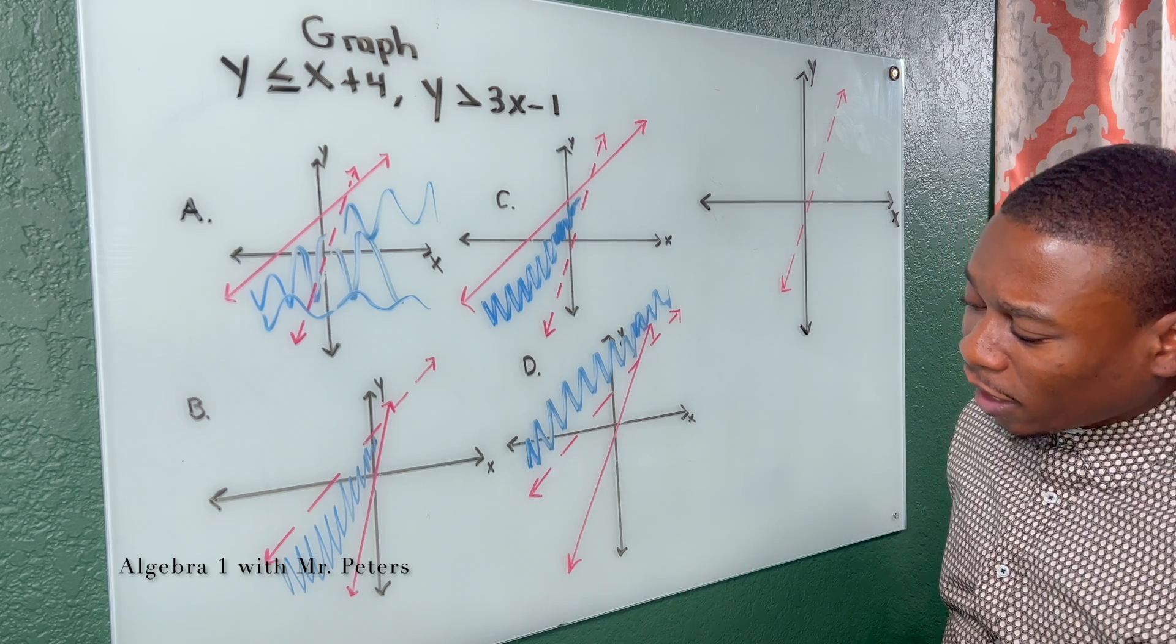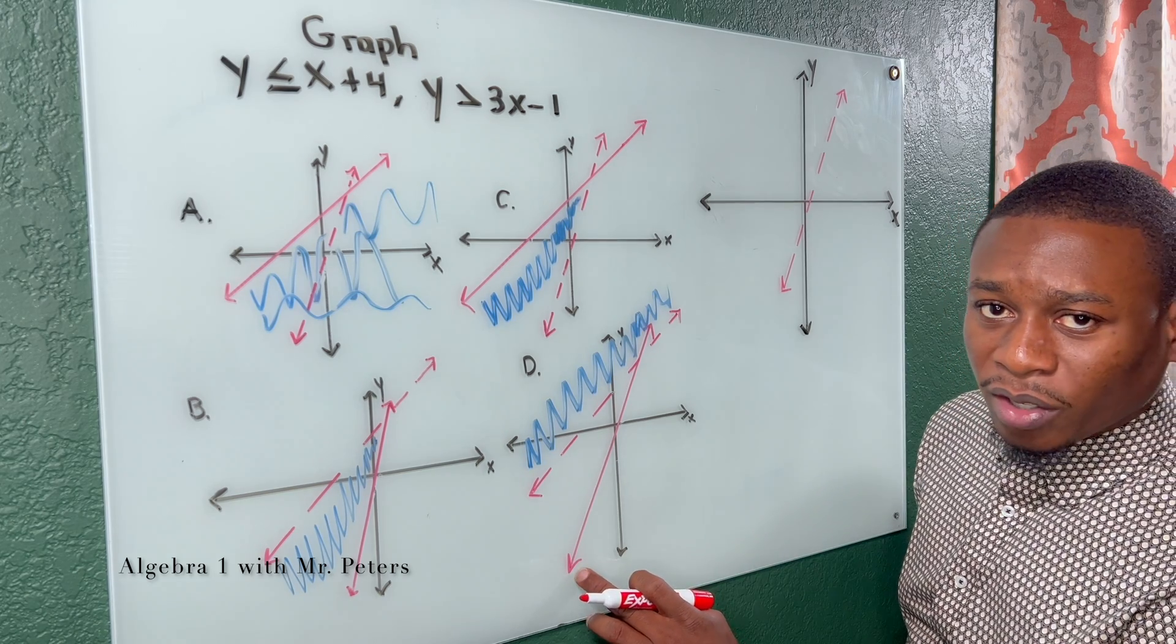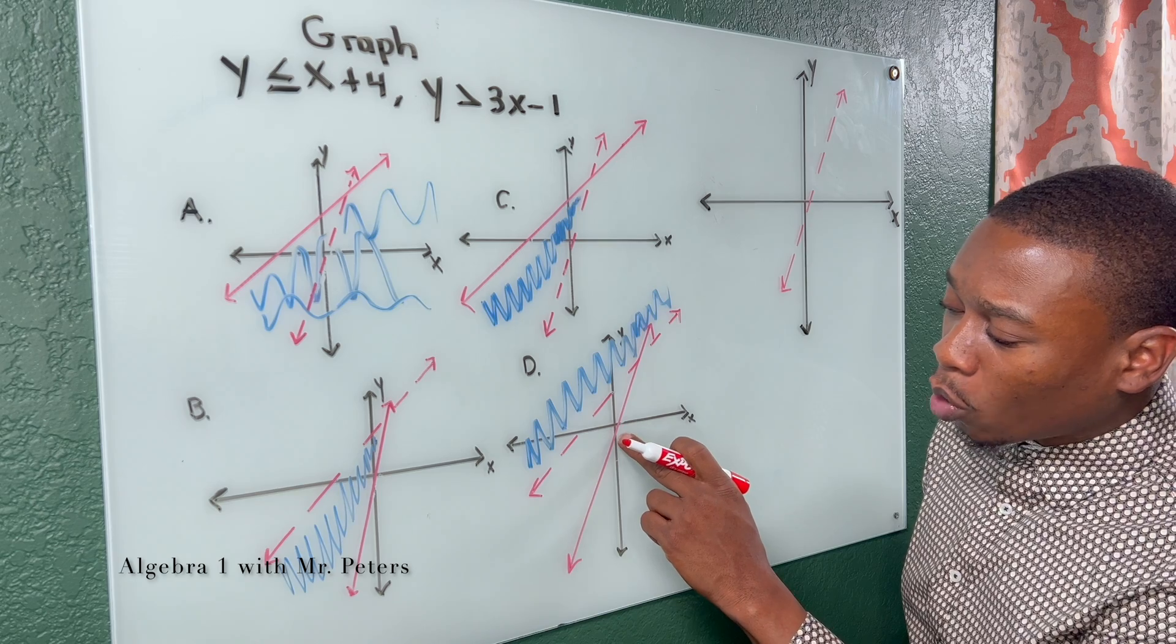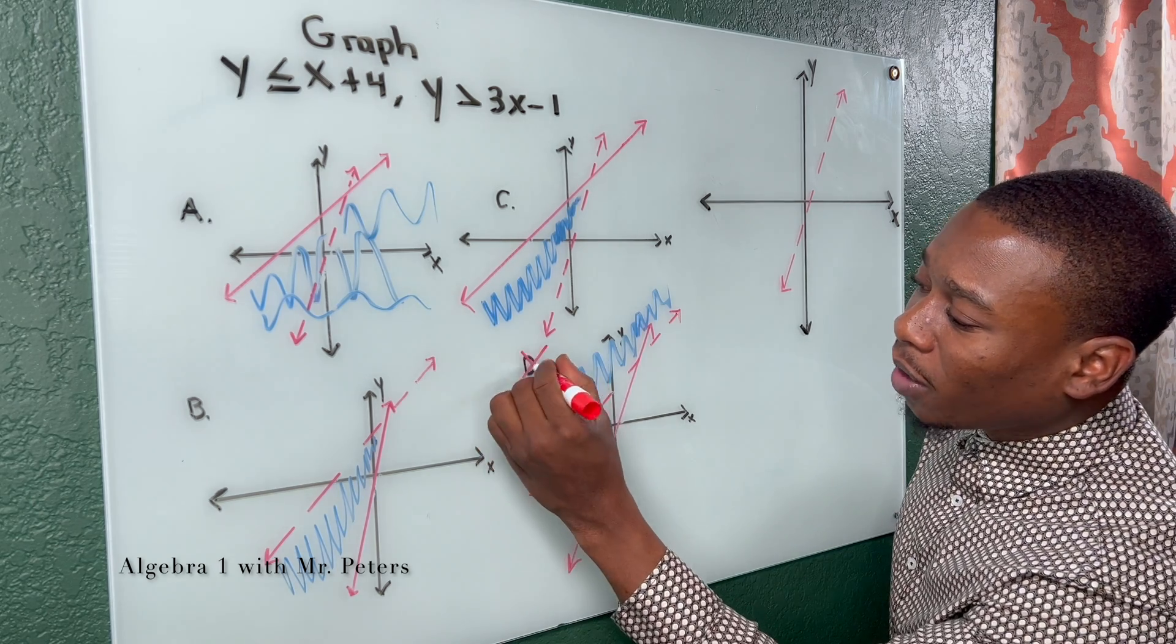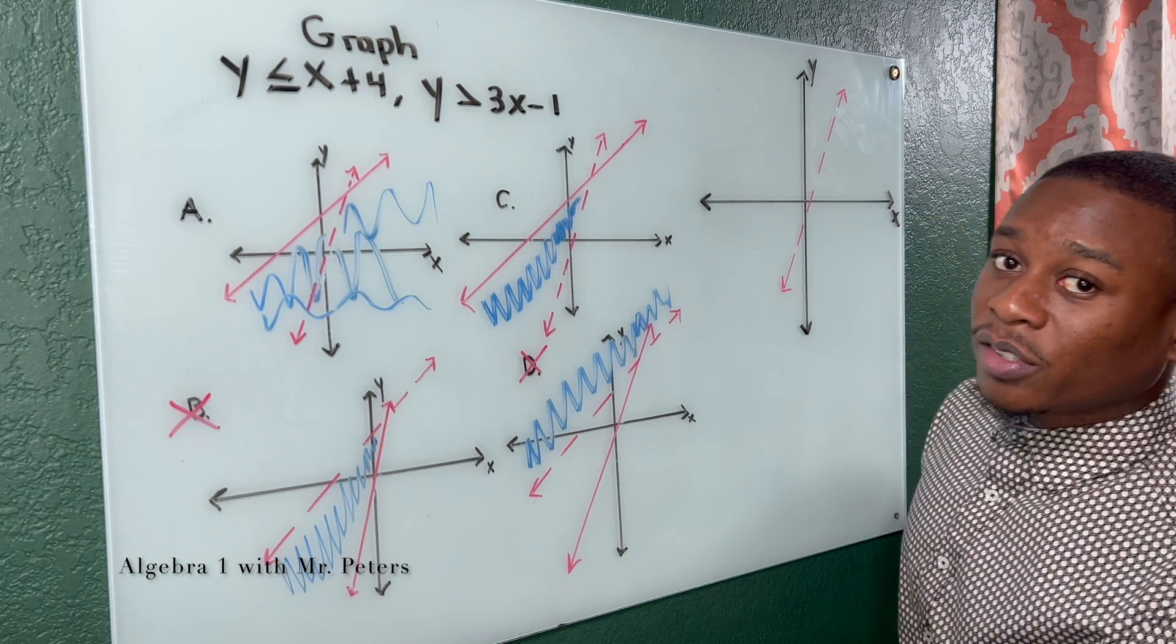So when I look at this, I say, hey, this is probably incorrect. Because when I look at it going through the y-intercept negative 1, it's a solid line. So this can't be my answer. And B can't be my answer.